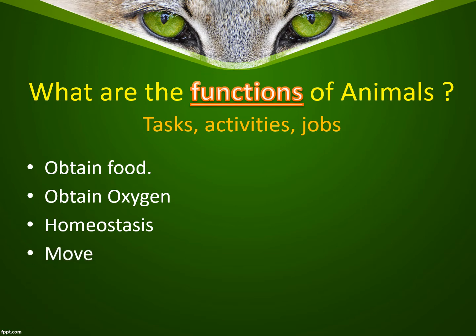Animals also have to be able to move. Even sessile animals — animals that stay in one place — still move their bodies; they just don't change locations. Being able to move does several things: it allows animals to go get their food, flee from a predator chasing them, and change their whole environment — like if their location runs out of food and water or becomes too crowded, they can move to find a more ideal situation.